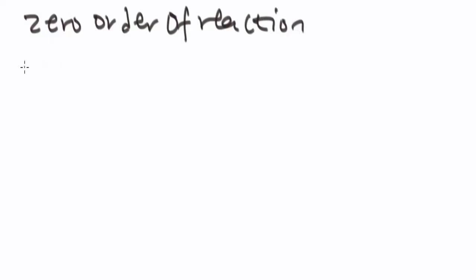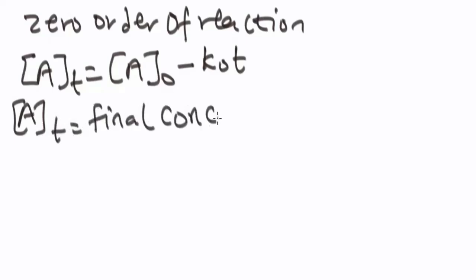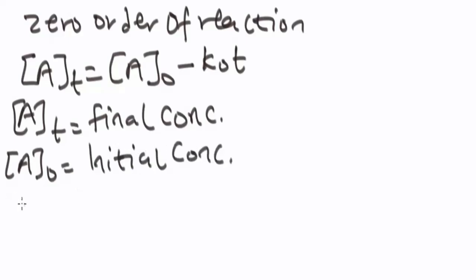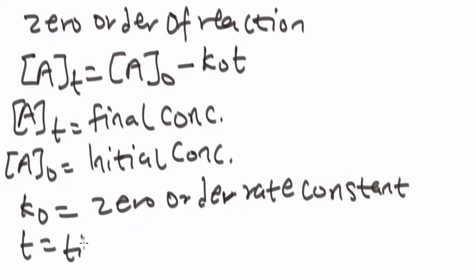The first one is zero order of reaction. For zero order of reaction, it can be calculated using: A_t = A_0 minus k_0 times t, where A_t is the final concentration, A_0 is the initial concentration, and k_0 is the zero order rate constant, and t is time.